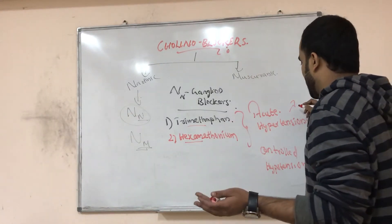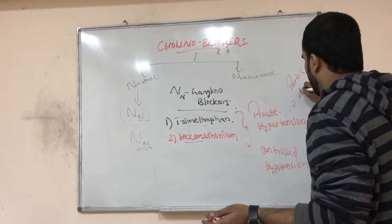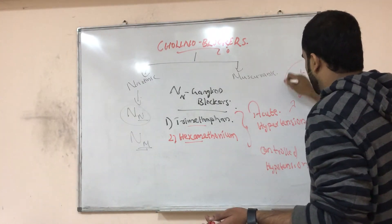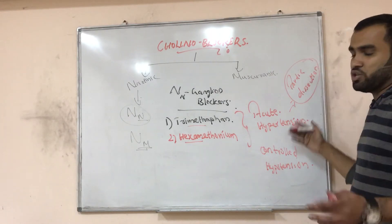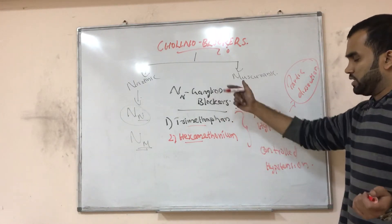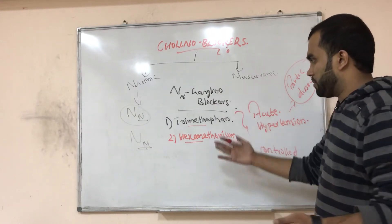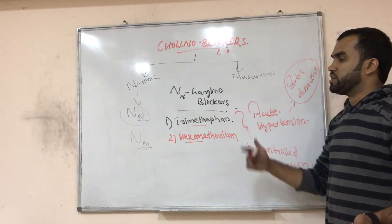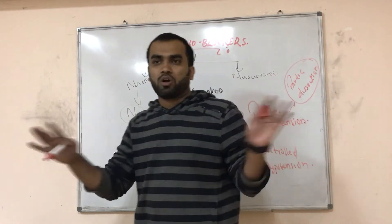Acute hypertension — for example, in aortic dissection, you will have a sudden rise in blood pressure. At that time you can block the ganglia, so you will have less acetylcholine at the presynaptic membrane. These drugs, trimethaphan and hexamethonium, act as parasympathetic blockers.